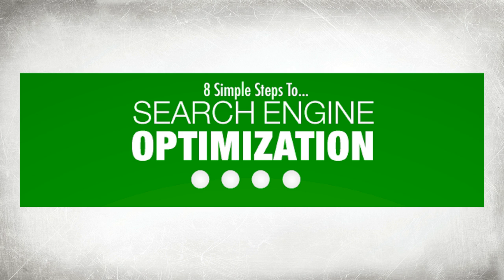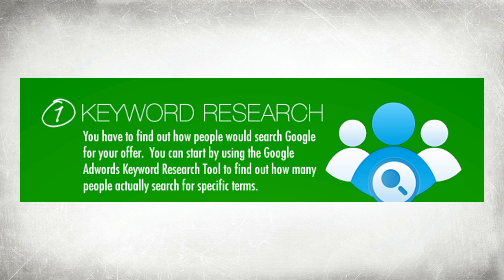First of all, understand search engine optimization works best when you have keyword research. You have to find out how people would search on search engines like Google for what you offer, what you sell, what your business name is, or what you're putting out there in front of people. There are different kinds of tools out there. One of those tools you could use would be the Google AdWords keyword research tool, and there are other keyword research tools out there that you can use to find out how many people actually search for a specific term.